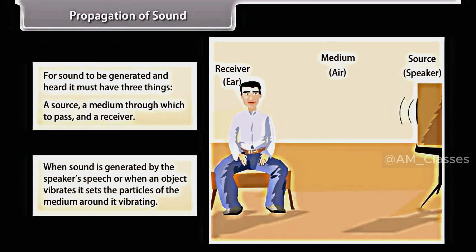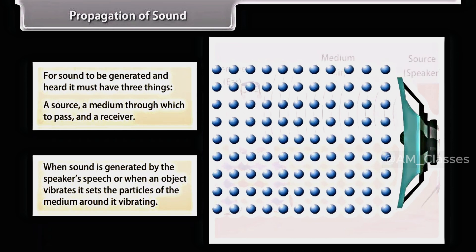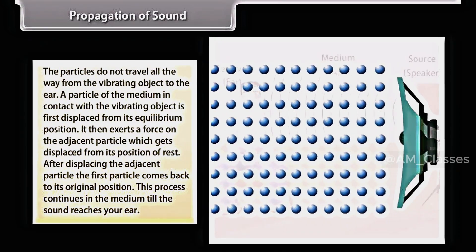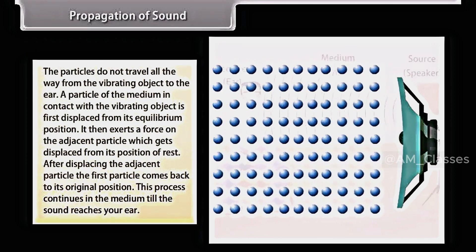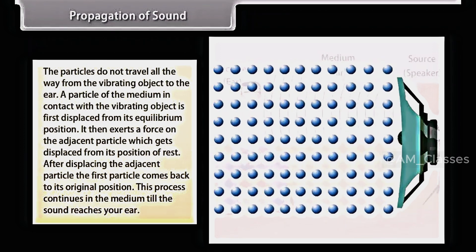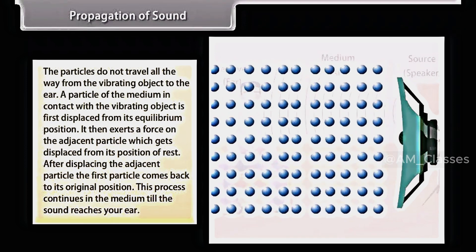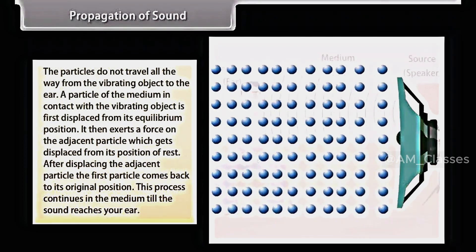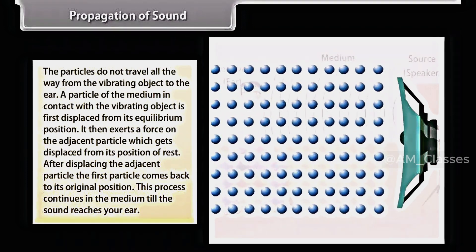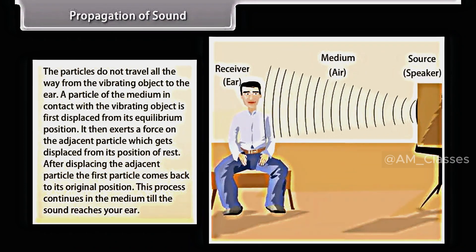When a sound is generated by the speaker's speech, or when an object vibrates, it sets the particles of the medium around it vibrating. The particles do not travel all the way from the vibrating object to the ear. A particle of the medium in contact with the vibrating object is first displaced from its equilibrium position. It then exerts a force on the adjacent particle, which gets displaced from its position of rest. After displacing the adjacent particle, the first particle comes back to its original position. This process continues in the medium till the sound reaches your ear.